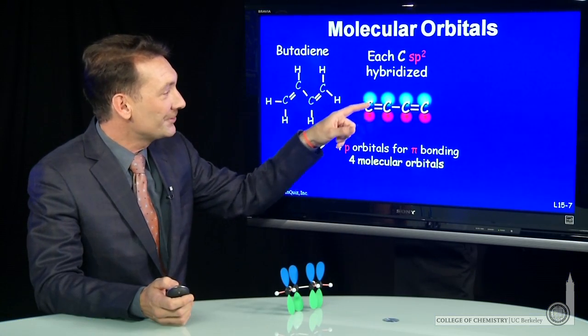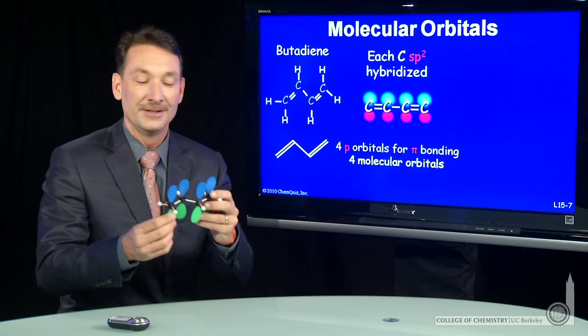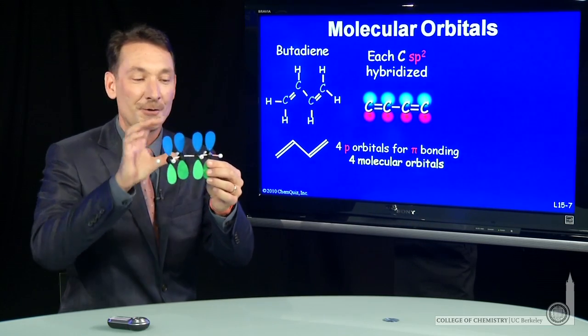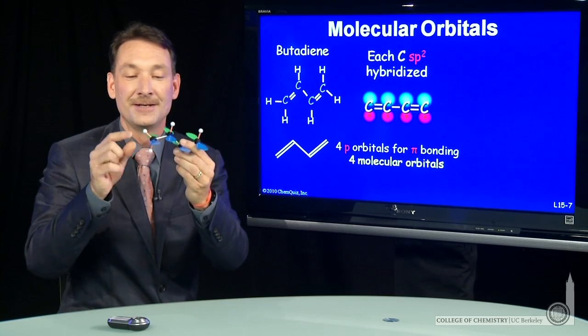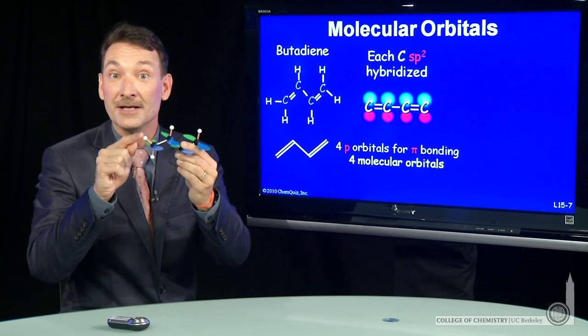The p orbitals are above and below the plane. So the molecule is planar, and the p orbitals look like this. So here's the carbon. Now, I have each carbon, and notice 120 degree bond angles. That's the sp2 hybridized.